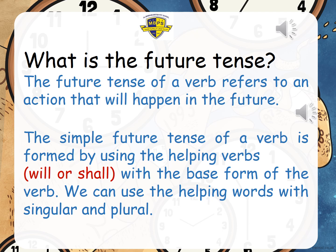What is the future tense? Future tense refers to an action that will happen in the future — it hasn't happened yet, it didn't happen before, it is going to happen. The simple future tense is formed by using the helping verbs will or shall with the base form of the verb — just the verb itself, like play, visit, or eat.